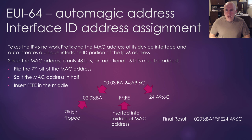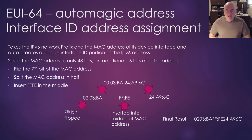You will often see EUI-64 most with the FE80s, because computers will create their own FE80 — which is the link local address required on every device. The device just goes ahead and makes up an FE80: the network ID would be FE80 as the prefix, and then the interface ID would be this long EUI-64 derived value.